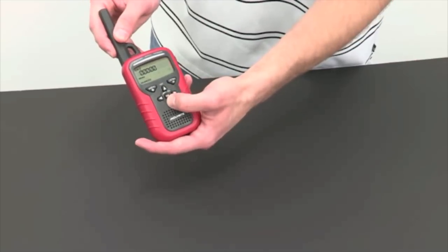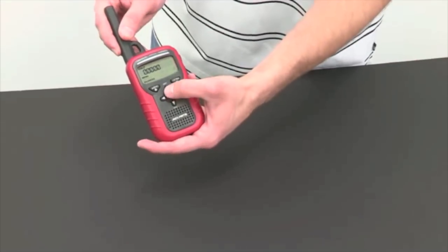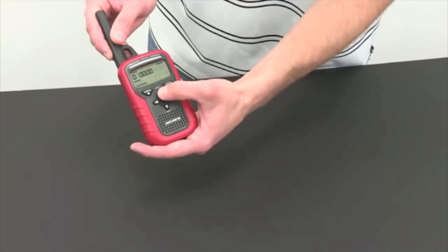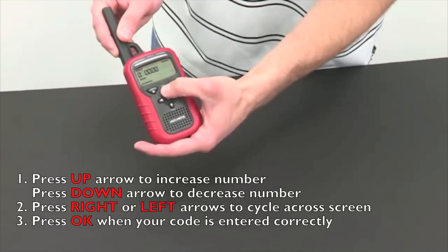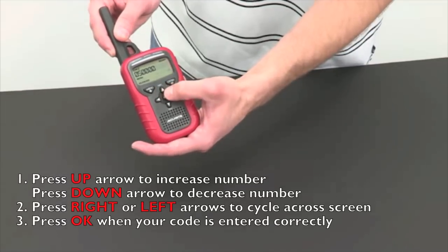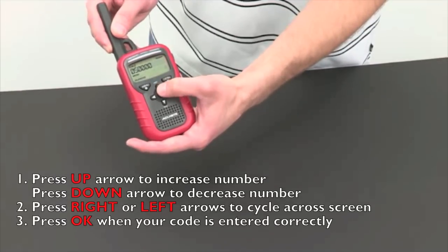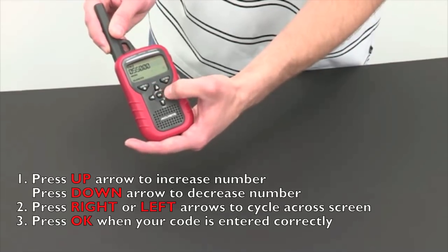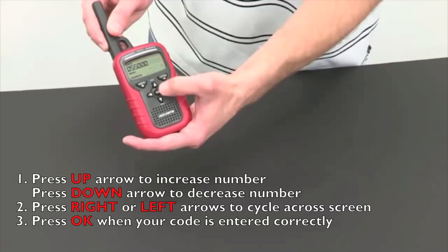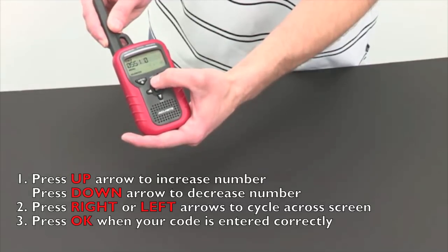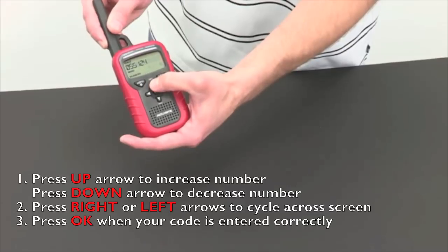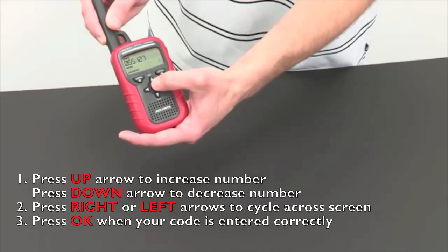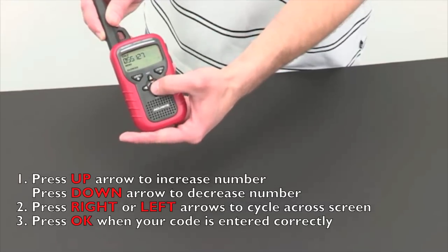Use the up and down arrows to increase or decrease the number. Use the left and right to cycle through. After you have entered the correct code, press ok.